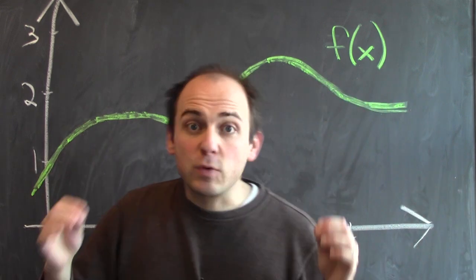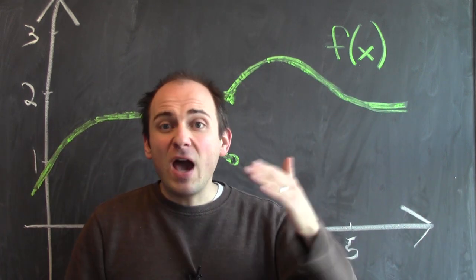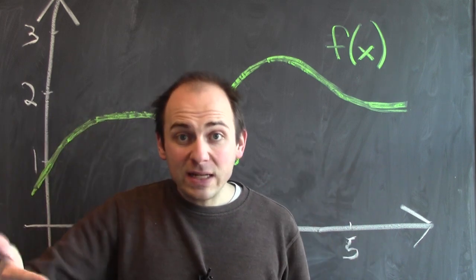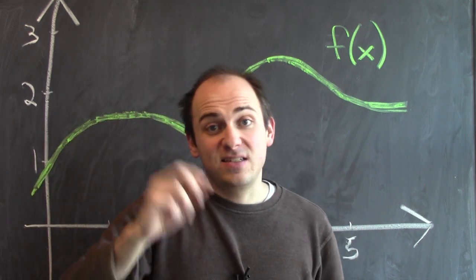This situation comes up quite a bit, where you compute and you find that the right-hand limits exist, but they disagree, and consequently, the two-sided limit doesn't exist.